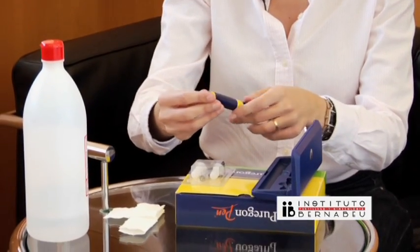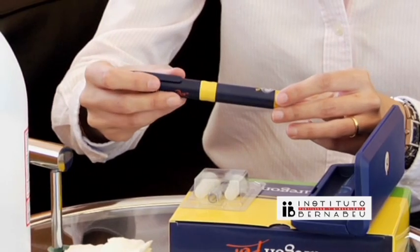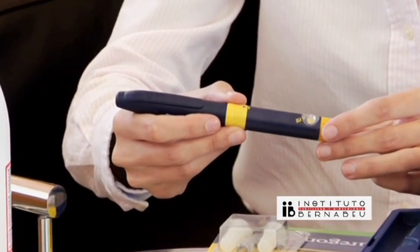The pen has units on the right-hand side. These international units are what you must select, based on the instructions given to you by the doctor overseeing your treatment.